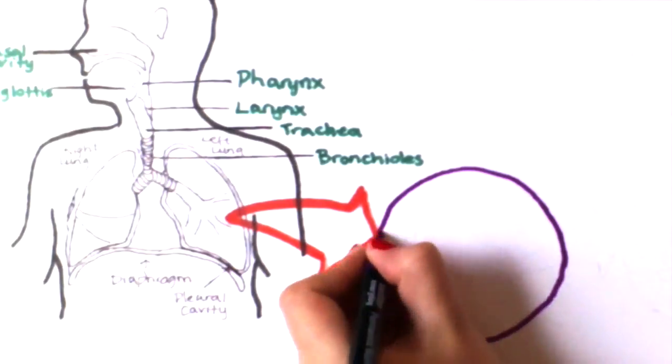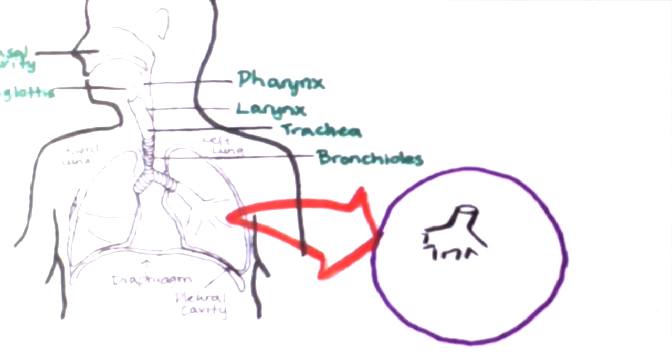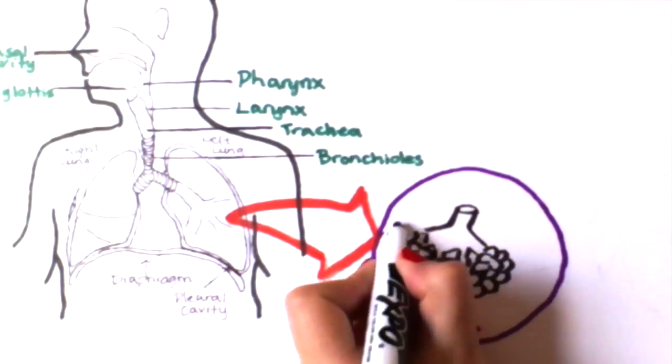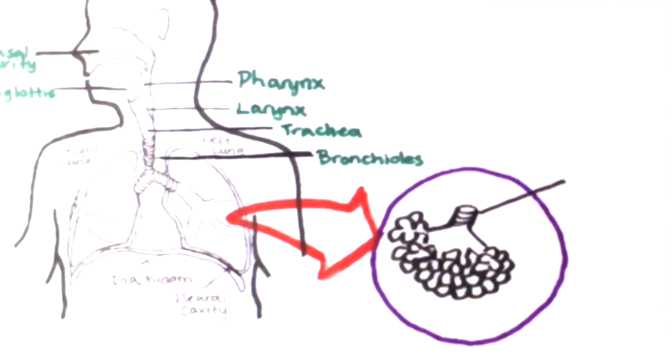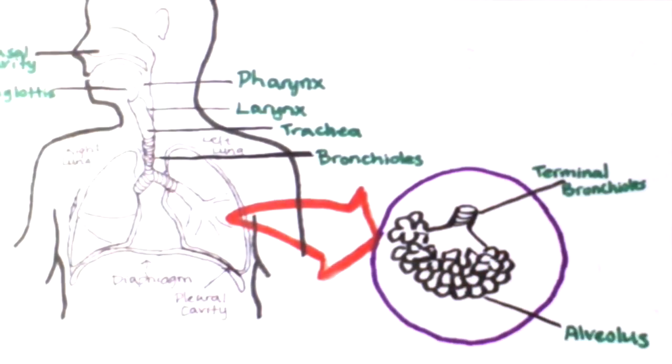Taking a closer look at the functional unit of the lungs, the alveoli, we notice that they look like a bunch of grapes. The reason they look like this is to increase the surface area. This allows for a vast amount of gas exchange to occur.